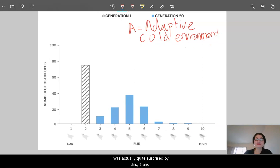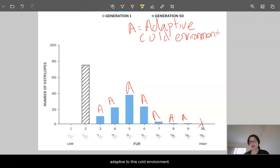And the traits that I still see as present are, I was actually quite surprised by this, 3 and 4 did a lot better than I had assumed, as well as 5, 6, 7, and it's a little hard to see, but we also got traits 8 and 9. Trait 10 did not appear. So, based on that, we could say traits 3 through 9 were adaptive to this cold environment.